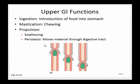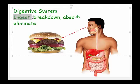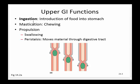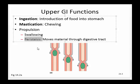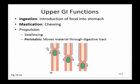Ingestion is basically just putting food into the mouth or stomach. Once that food is ingested we have to start to break it down. One way of physical digestion is chewing, also called mastication. Food also needs to be propelled to the next area in the digestive tract. One example of that would be swallowing, and this involves a movement called peristalsis.